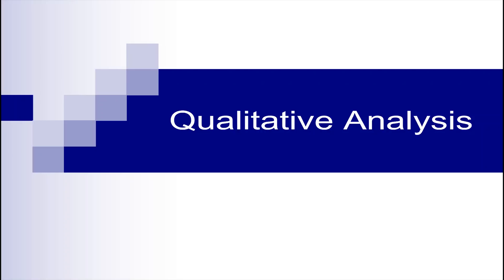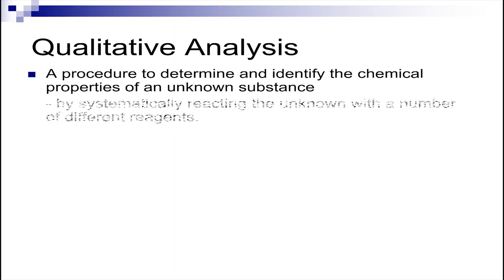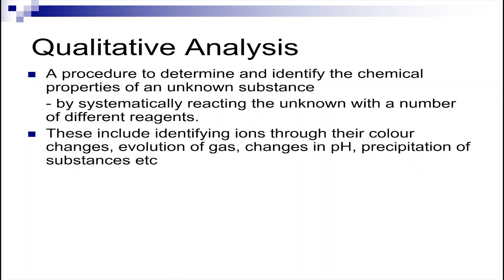Hi everyone. In this topic we're going to talk about qualitative analysis. For this chapter, you will learn how to identify and determine the chemical properties of an unknown substance by systematically reacting the unknown with a number of different reagents so that you can identify the ions through their colour changes, any gases produced, and precipitation.